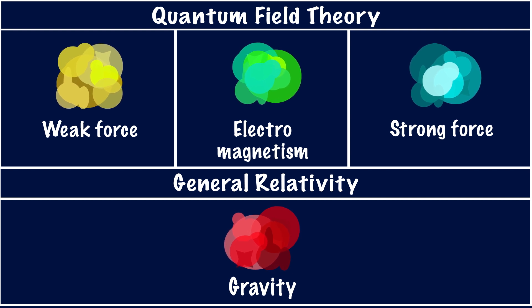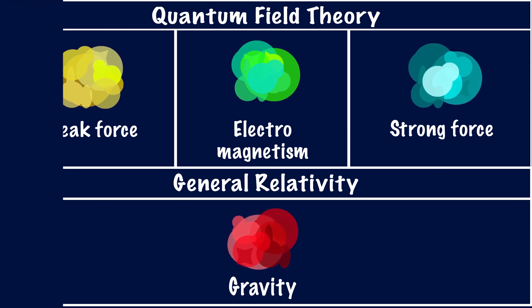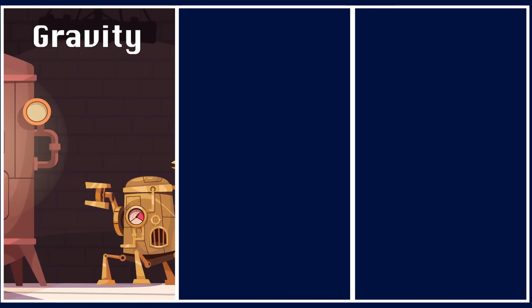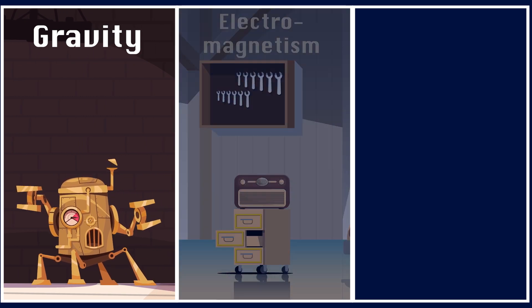In the past, each time scientists discovered one of these forces, it altered the course of civilization, forever changing the world as we know it. Newton's discovery of the laws of motion and gravity helped push humanity into the age of machines, laying the groundwork for the Industrial Revolution.